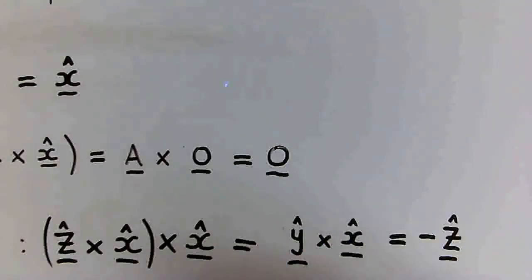And this is not equal to the zero vector, so therefore we've disproved by counterexample that the cross product is associative.